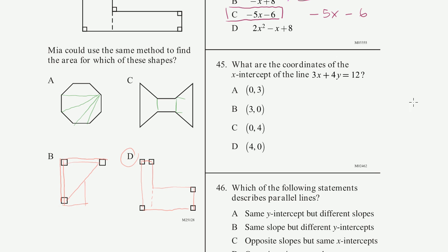Problem 45. What are the coordinates of the x-intercept of the line 3x plus 4y is equal to 12? I want to know the x-intercept. Remember, the x-intercept, let me draw the axes.